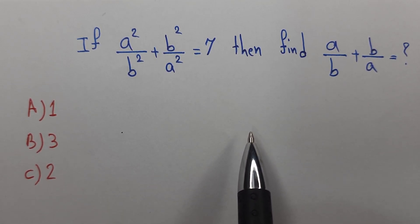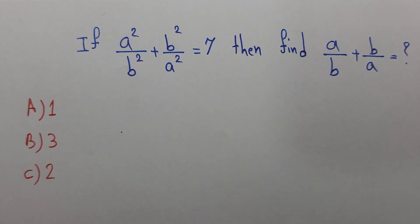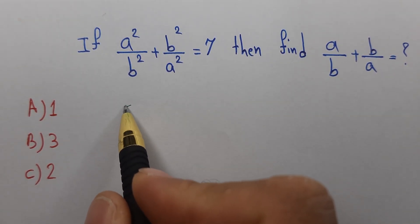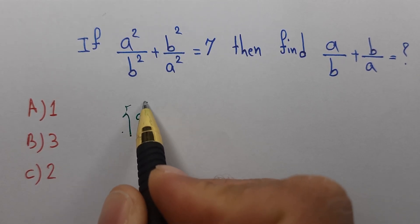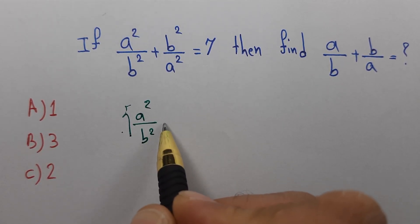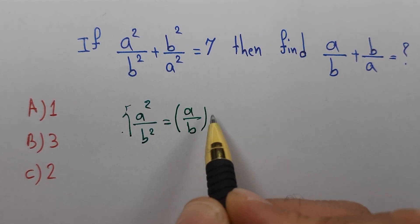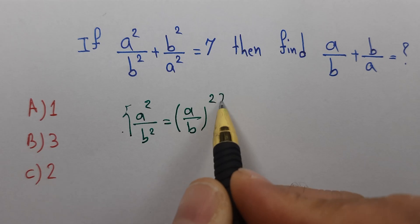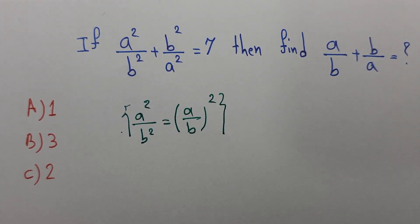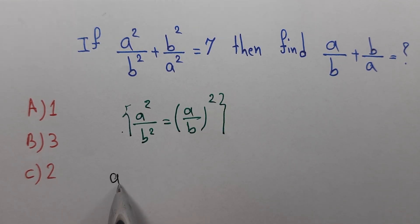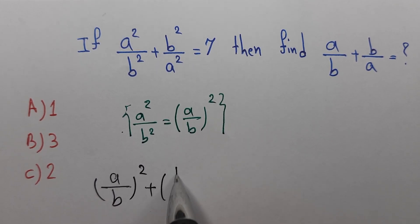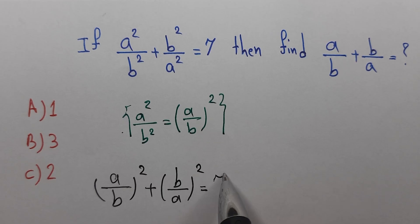As you know, a² / b² can be written as (a/b)². So we can write (a/b)² + (b/a)² equals 7.